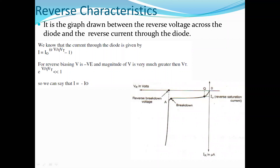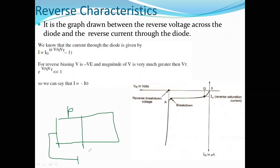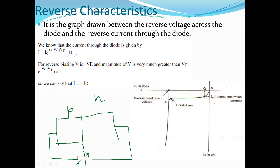Next is the reverse bias condition, or reverse characteristics. In reverse bias, the diode is reverse biased — the P side is connected to the negative terminal and the N side to the positive terminal of the battery. The same diode current equation applies, but here the input voltage V is negative.